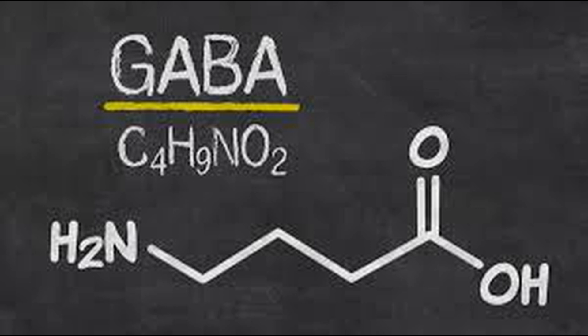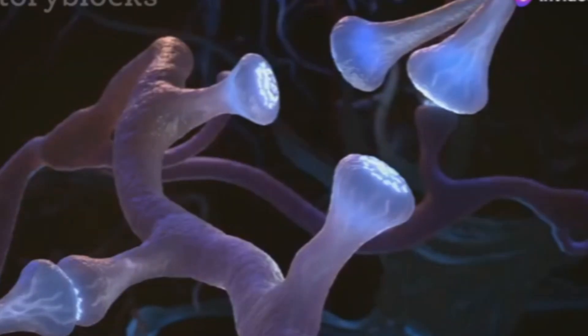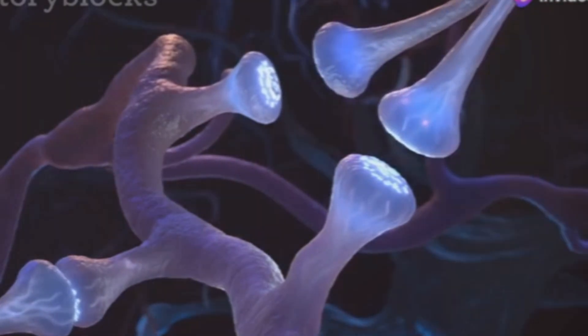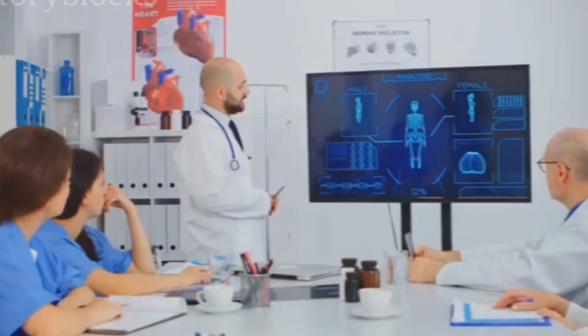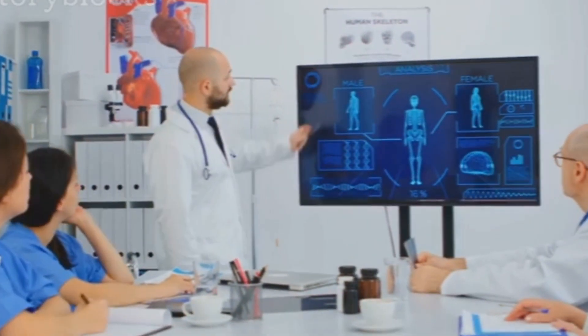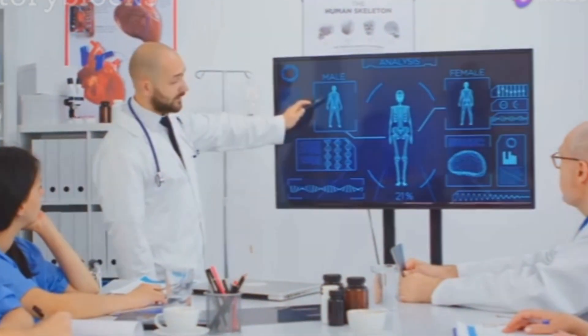GABA, or gamma-aminobutyric acid, is the primary inhibitory neurotransmitter in the brain. It plays a vital role in reducing neuronal excitability and maintaining balance within neural circuits. Without GABA, our brains would be in a constant state of overexcitation.